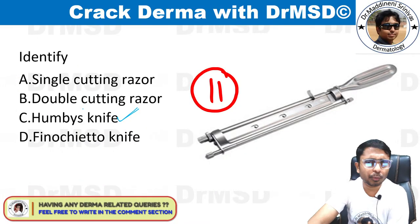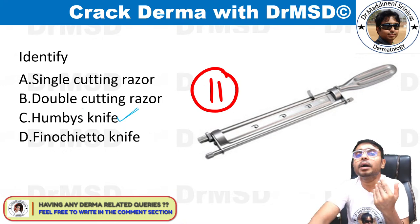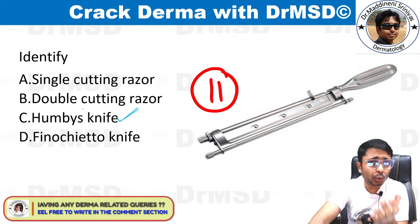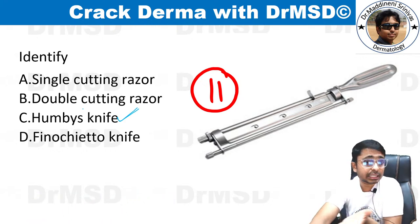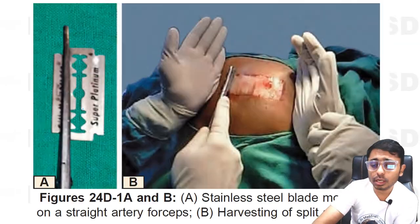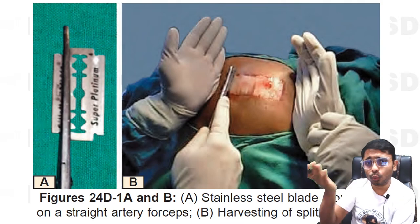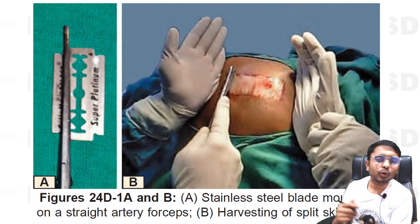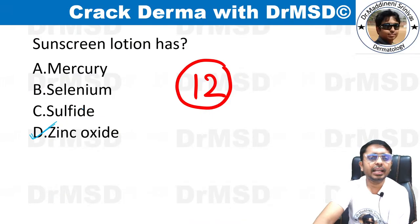This instrument you have most likely seen in surgery or plastic surgery postings. To perform a skin graft, Humby's knife is used to take the skin graft from the donor site and place it over the recipient site.